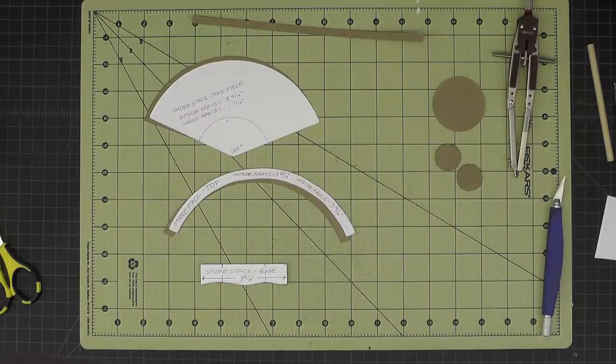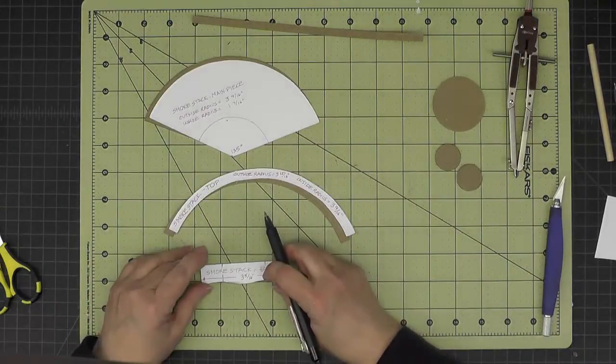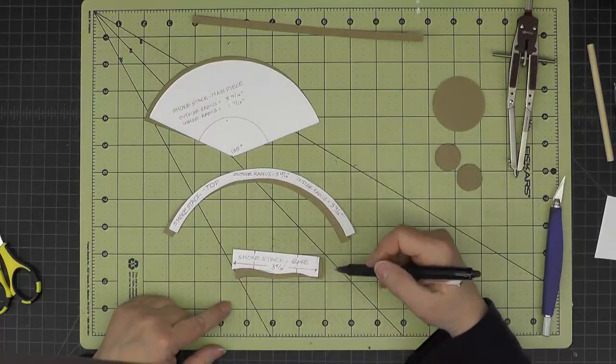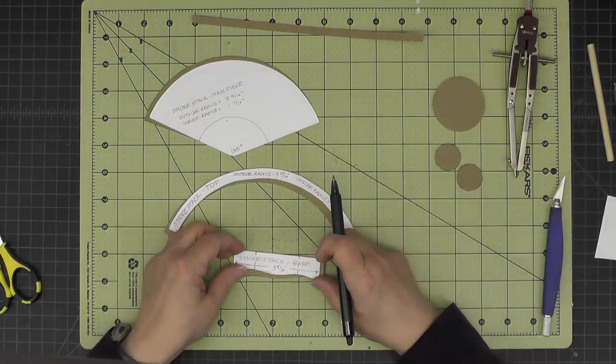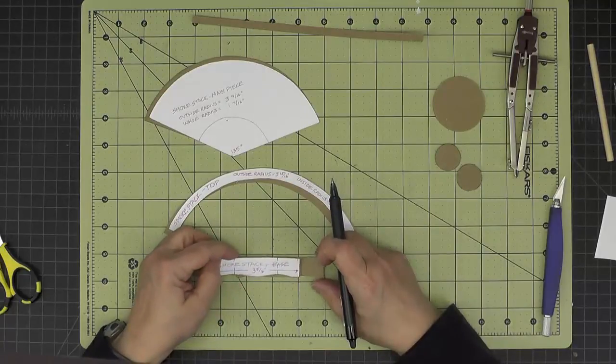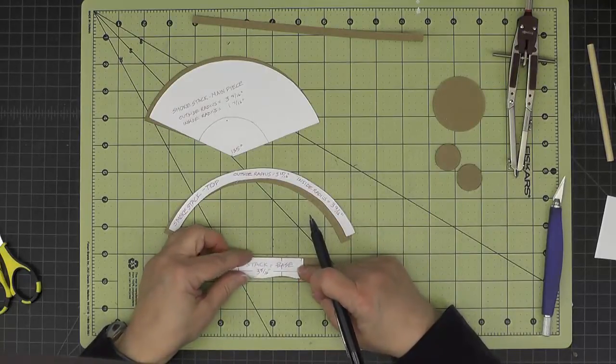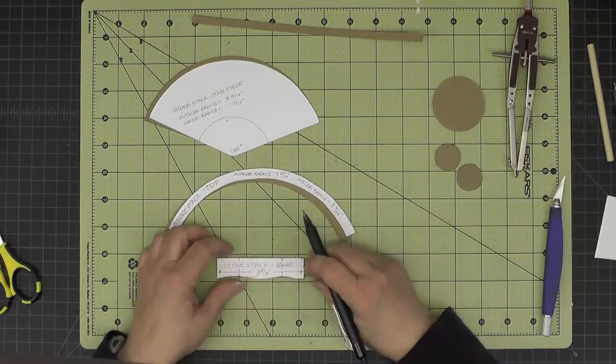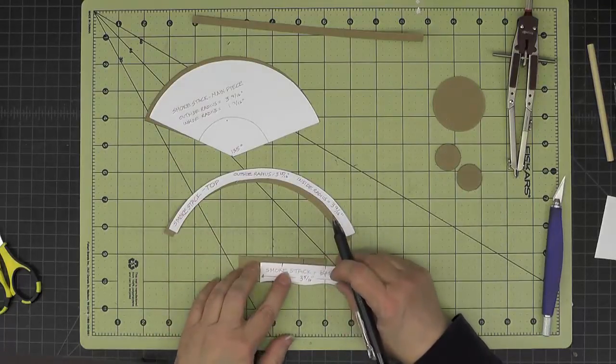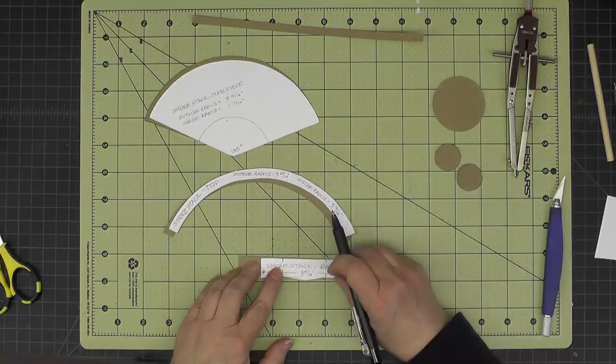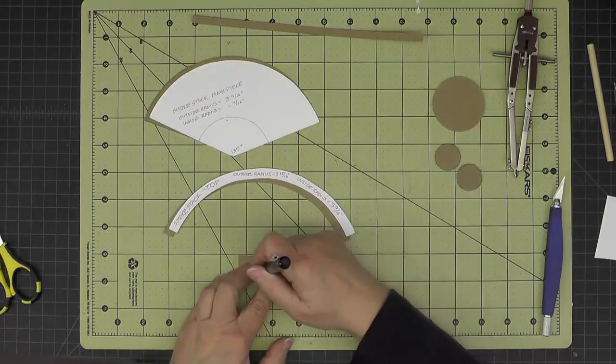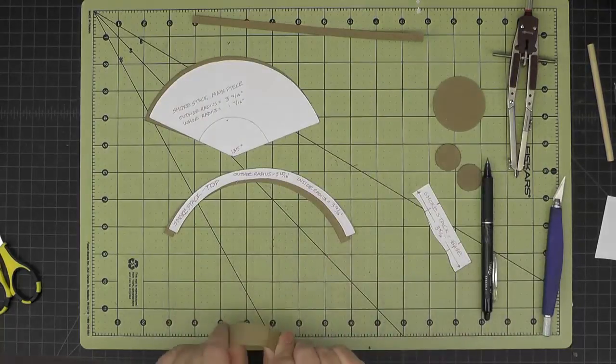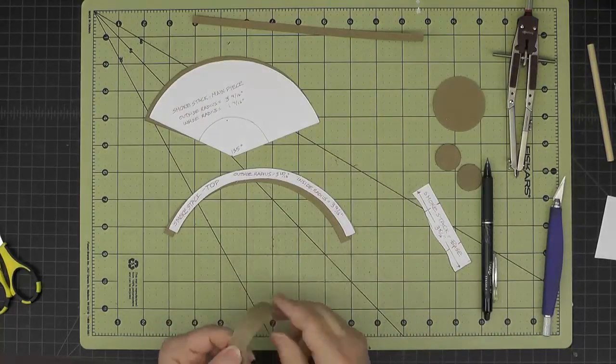So I have all of my pieces cut out from the templates now, and the first thing I want to do is check my curves on the base, just like we did on the steam and sand domes. So I'm going to transfer the green markings to the chipboard, which will help us center it. And then go ahead and curve this around.